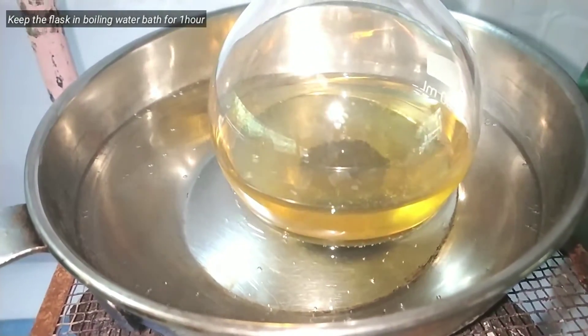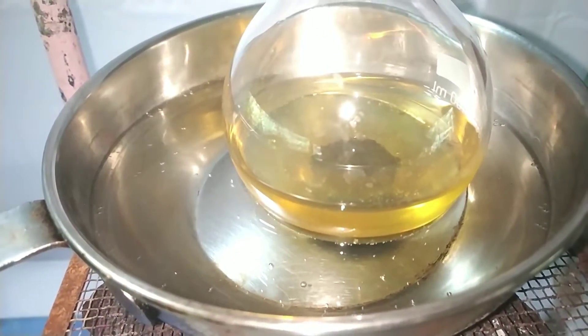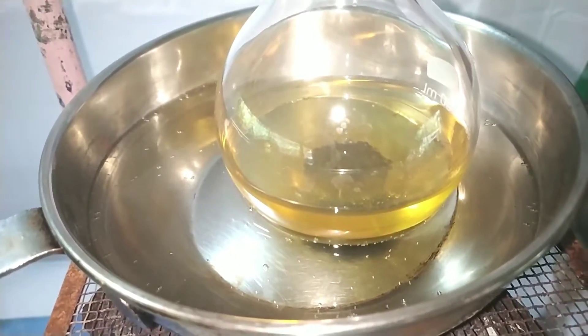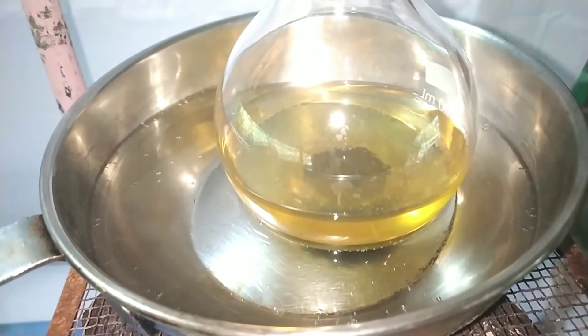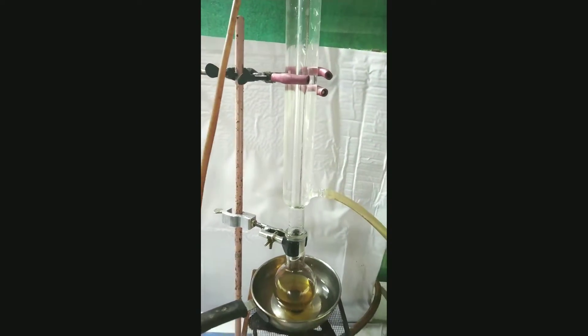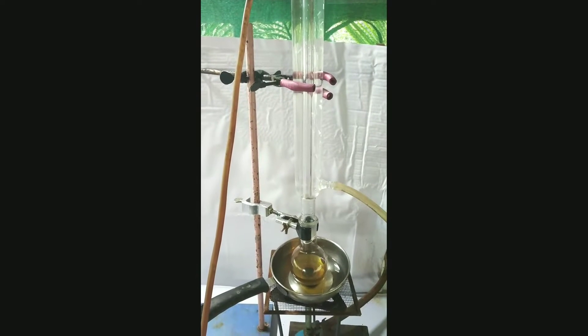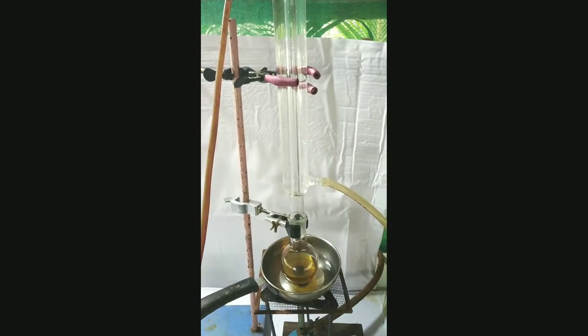When the complete acid has been added, we keep the flask in boiling water bath for about 1 hour. Here is the complete view of the reflux mechanism and the flask is now sitting in boiling water bath.